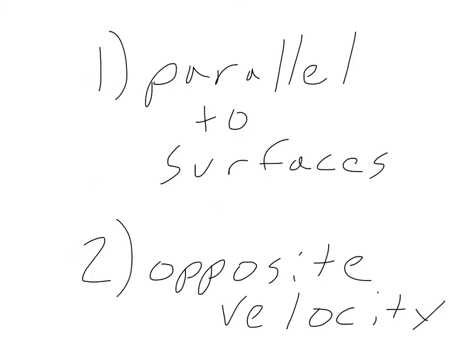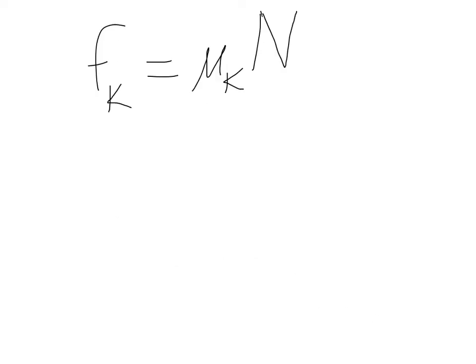Like static friction, kinetic friction is always parallel to the two surfaces in contact. But unlike static friction, the direction of kinetic friction depends on the velocity of the sliding object — kinetic friction acts in the opposite direction of motion. Also like static friction, kinetic friction depends on the normal force and the coefficient of kinetic friction, pronounced mu k.